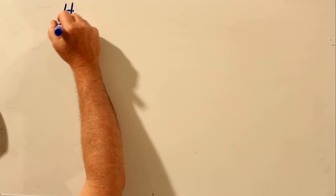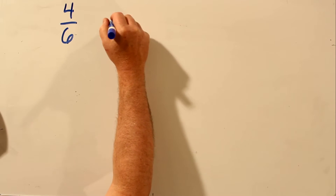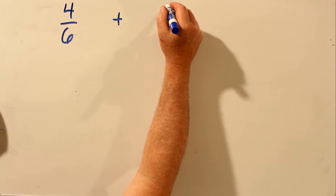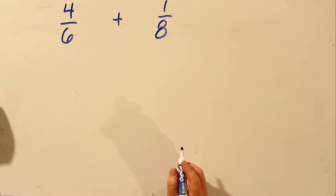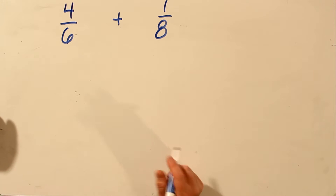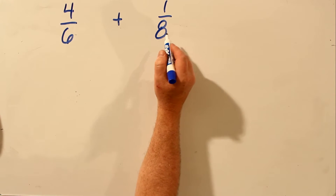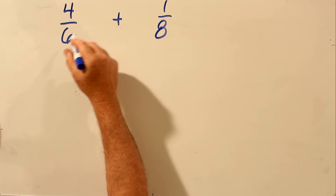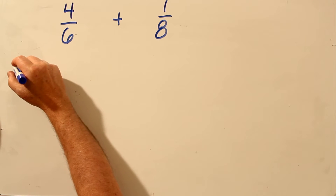We will add 4 sixths to 1 eighth. Now in order to add fractions, your bottom number has to be the same. In order to make the bottom number the same, you have to find the lowest common multiple. So to find the lowest common multiple of 6 and 8, the lowest common multiple is 24.